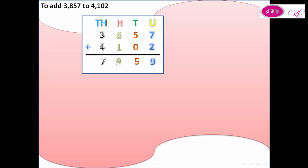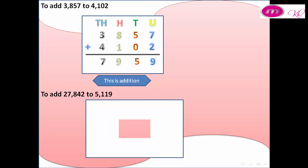What do we do to add 27,842 to 5,119? Units: 9 and 2. Tens: 4 and 1. Hundreds: 8 and 1. Thousands: 7 and 5. Ten thousands: we have 2 in number one.